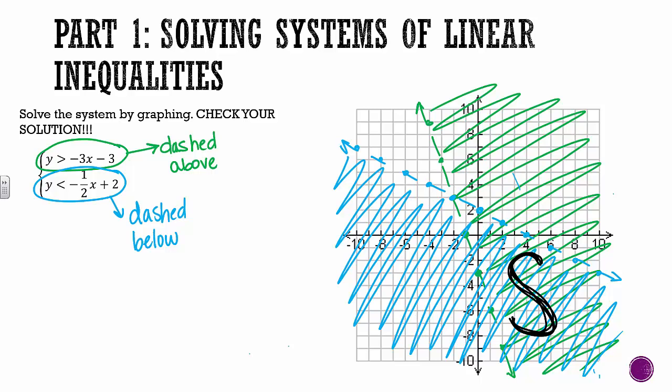Because basically what happens when you draw two equations on a grid like this, is you break it up into four different parts. This part up here, where it's just green. This part here, where there's nothing. This part here, where it's just blue. And then this part here, where you have all your solutions. So by writing the S in this part, I know that you know exactly where the solutions are.